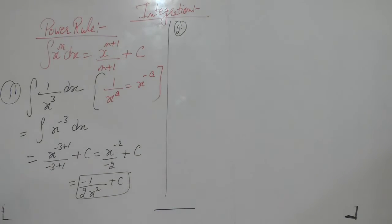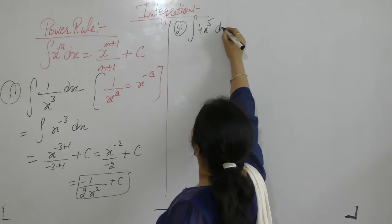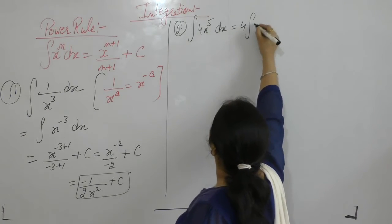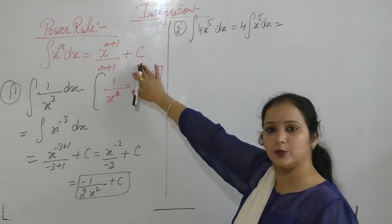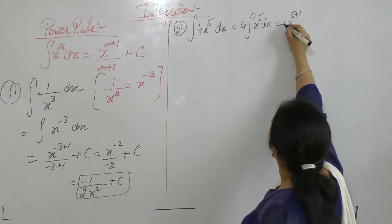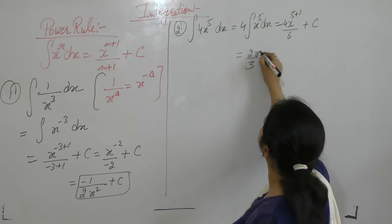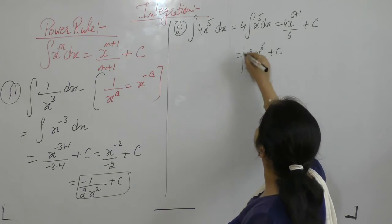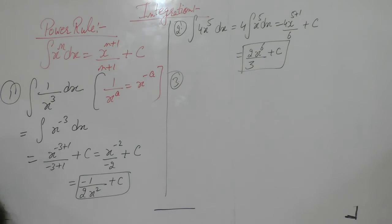Example 2: Integral of 4x⁵ dx. Since 4 is a constant, we take it outside: 4 times integral of x⁵ dx. Applying the power rule with n = 5: 4 × x^(5+1)/(5+1) = 4x⁶/6 = (2/3)x⁶ + C.